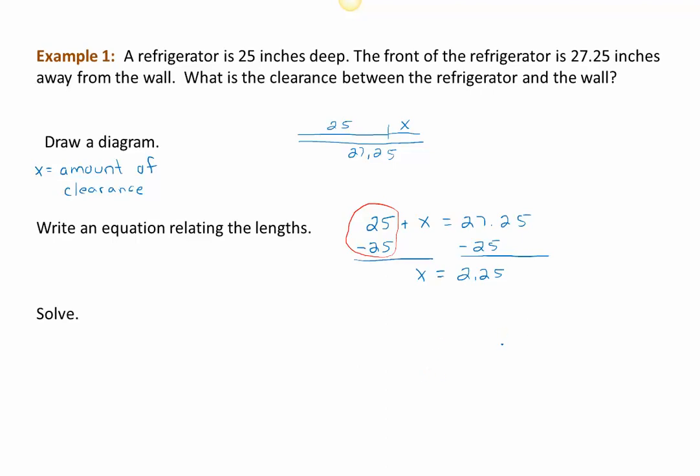The real question is 2.25 what? It's always a good idea to write your answer as a sentence. 'There are 2.25'—if we stop there, it sounds silly. That's just about as silly as saying X equals 2.25 when somebody asks you what the clearance is. Look back at our units and see that we need inches. If you really want to be thorough, you might say there are 2.25 inches of clearance between the refrigerator and the wall.